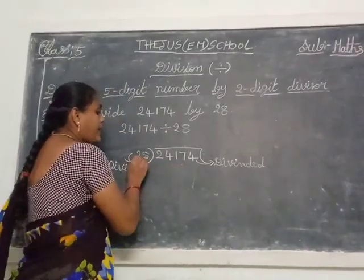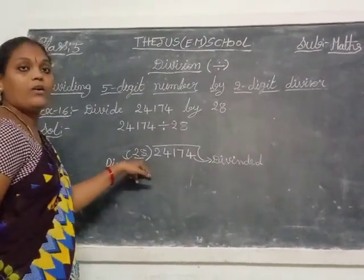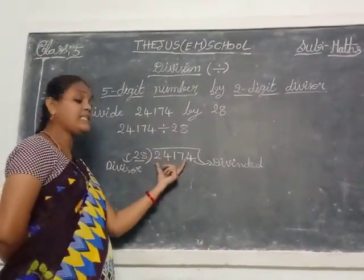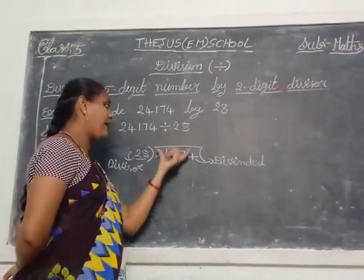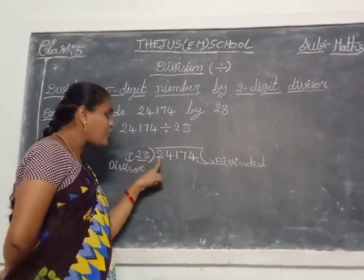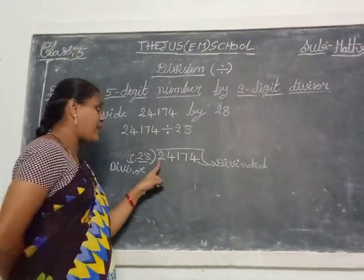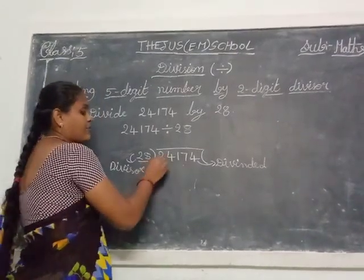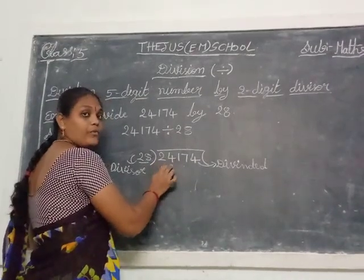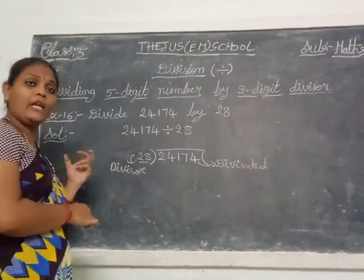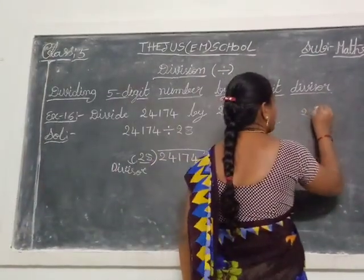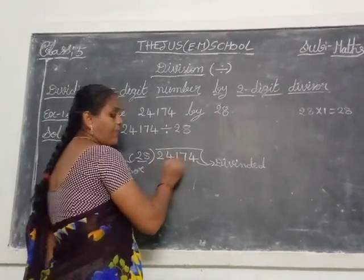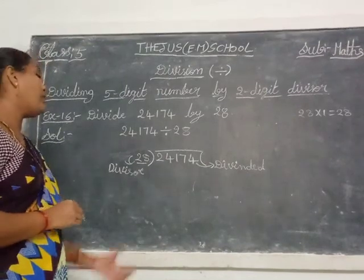Now we will do the division using the 28 times table. 28 is the divisor, so we check each multiple. First check 2 — is 2 in the 28 table? No. Then check 24 — is 24 in the 28 table? No. Because the first number in the table is 28 itself. So we will check a 3-digit number: check 241.